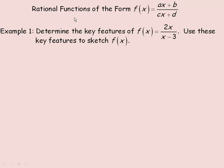In this lesson, we'll take a look at graphing rational functions of the form ax plus b over cx plus d — basically a linear function over a linear function, or a first degree polynomial over a first degree polynomial. In this example, we're asked to determine the key features of the function 2x over x minus 3, and use them to graph the function. The key features are domain and range, vertical asymptotes, behavior near the vertical asymptotes, intercepts, and where the function is increasing and decreasing.